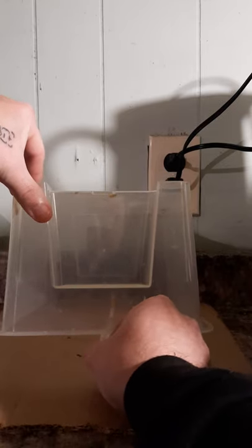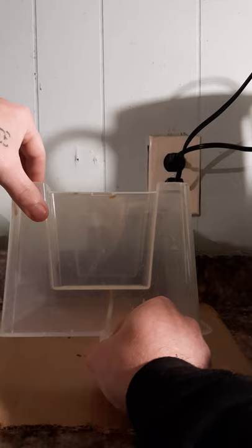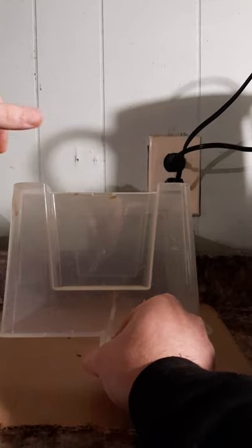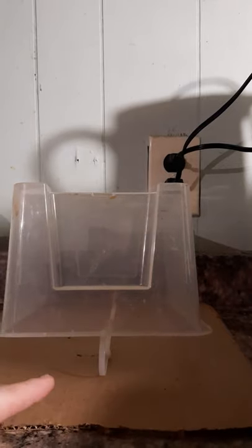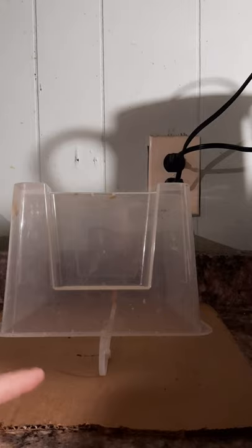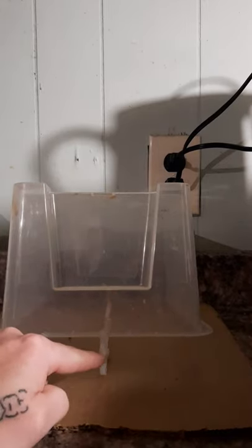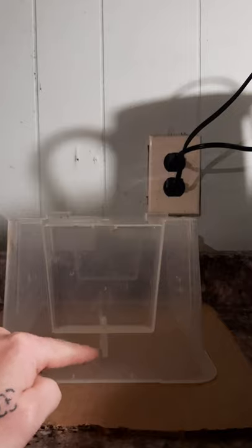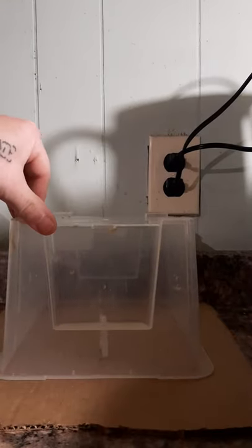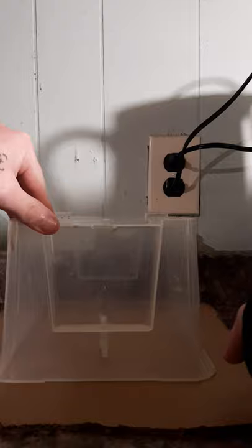Now what you do is balance your Tupperware just barely on the loop of that zip tie, and what's going to happen is the mouse is going to run up underneath there and it's going to want that peanut butter, and when it gets the peanut butter it drops, trapping the mouse, and that's where the cardboard comes in.